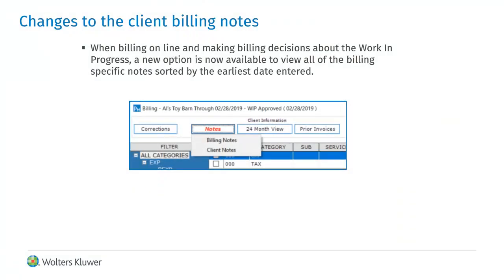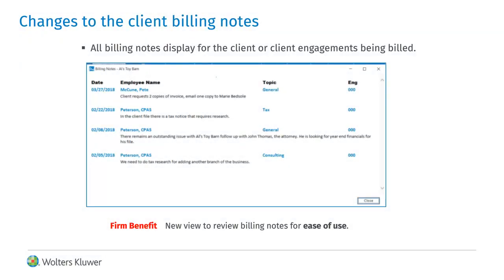In billing, when making WIP selections to bill, the Client Notes button now displays a caption called Notes and includes two options to look at all client notes. The current model includes all client notes. In addition, a new option provides notes that are marked with billing as the type of note. When the user selects the billing notes only to display, the notes are displayed continuously with the most recent dates at the top.